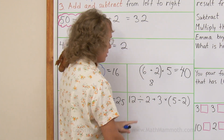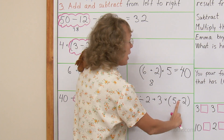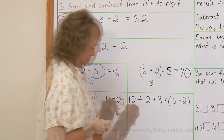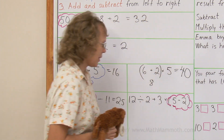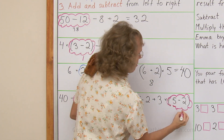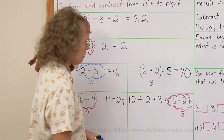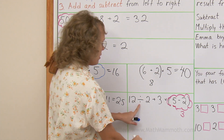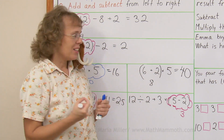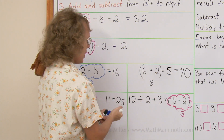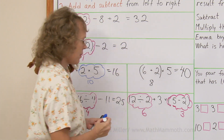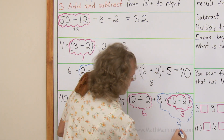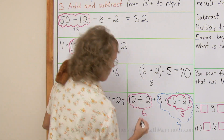Now over here we have lots of operations: there's division, addition, multiplication, and subtraction — all four basic operations. Which one first? Matty found it: it's the parenthesis, and we have 3 here. And then what's next? Division, addition, multiplication — the addition is to be done last. So we have division and multiplication to do, and they are on the same level, so we do them from left to right. This division gives 6, then the multiplication: 3 times 3 is 9. And lastly addition: 6 plus 9 equals 15.